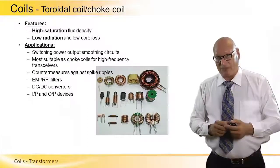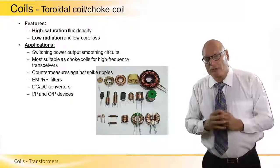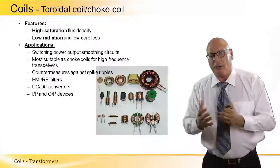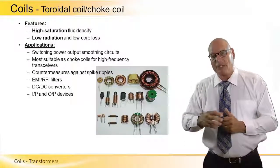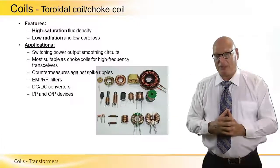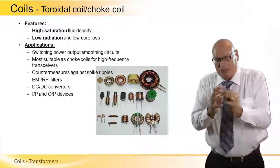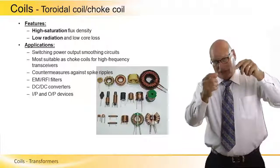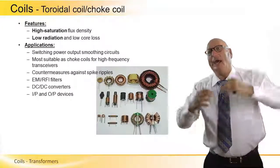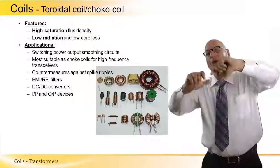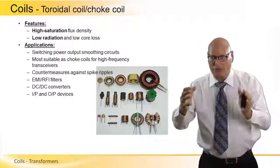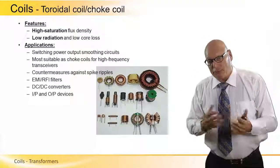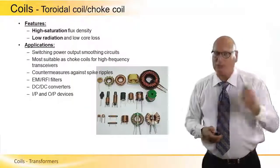Countermeasures against spike ripples. Because we have a concentrated and high saturation electromagnetic field, it protects against external spikes and ripples that are coming on the line. EMI RFI filters: electromagnetic interference and radio frequency interference filters. DC to DC converters. Because there is a concentrated magnetic flux in between the ring, we can apply DC into a DC to DC converter and convert it into AC, have a concentrated flux, convert the AC back to DC and get DC outside. We don't lose any energy from the conversion of DC to AC and AC to DC. Input and output devices to minimize the losses between the input and the output.